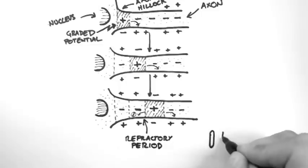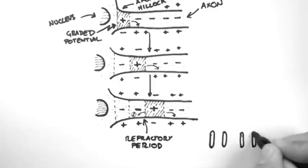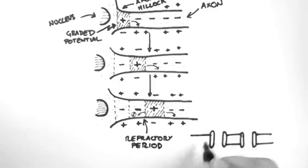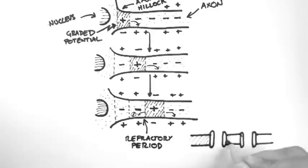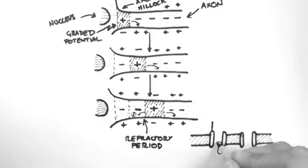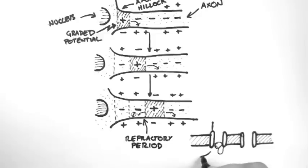So we'll have a look at the channels again and see why this is. Remember that when the channels close, they don't actually close by flipping the gate shut. They close by this ball and chain mechanism. When the ball is in the channel, the channel is totally inactive and can't be triggered again. After some time, the channels will reset entirely, and then they will be ready for another action potential.